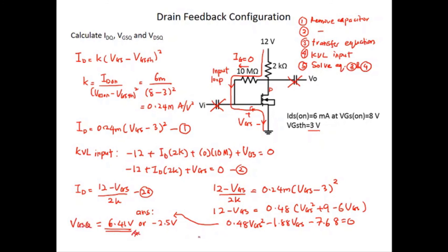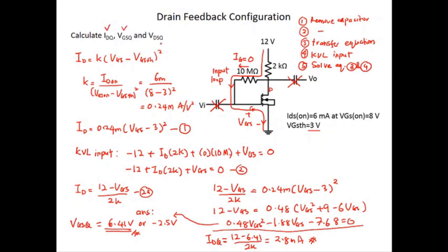For IDQ, use equation 2A: IDQ = (12 − VGSQ) / 2K = (12 − 6.41) / 2K = 2.8 mA. So IDQ = 2.8 milliamperes. For this problem you need to calculate IDQ, VGSQ, and also VDSQ.